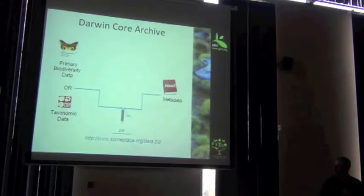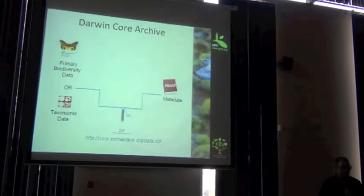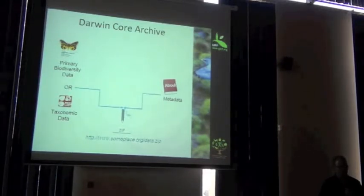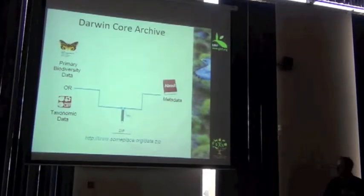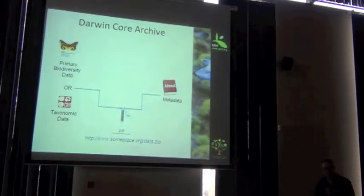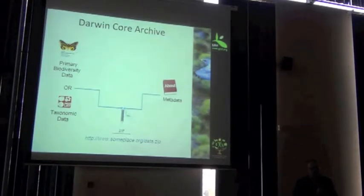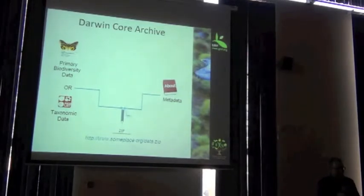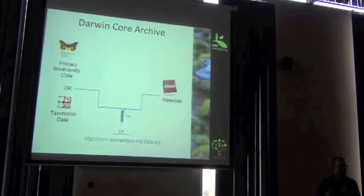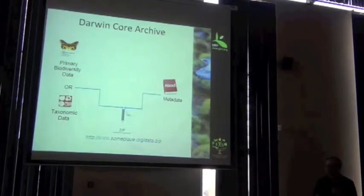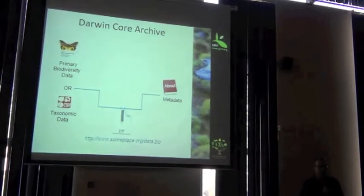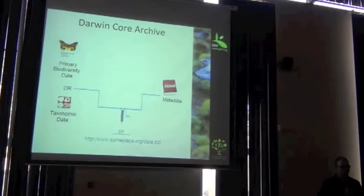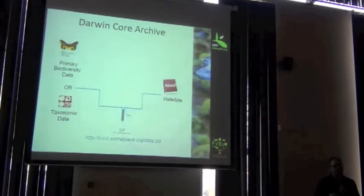And your data, when we're talking about biodiversity data, it's either primary biodiversity data, occurrence data, or taxonomic data, species names. And whenever you're sharing your data set, it's absolutely essential that you also share what's called metadata, information about what your data set contains.